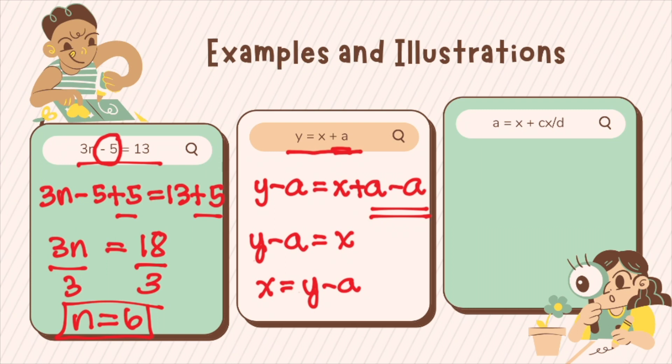How about if we have, let me just rewrite this, a equals x plus cx over d. Now, you want to make or rearrange the formula so that x will be the subject. So since you have a d here, we will multiply all sides by d. So d times a will be ad equals d times x will be dx. And this one cancels out. That will be plus cx.